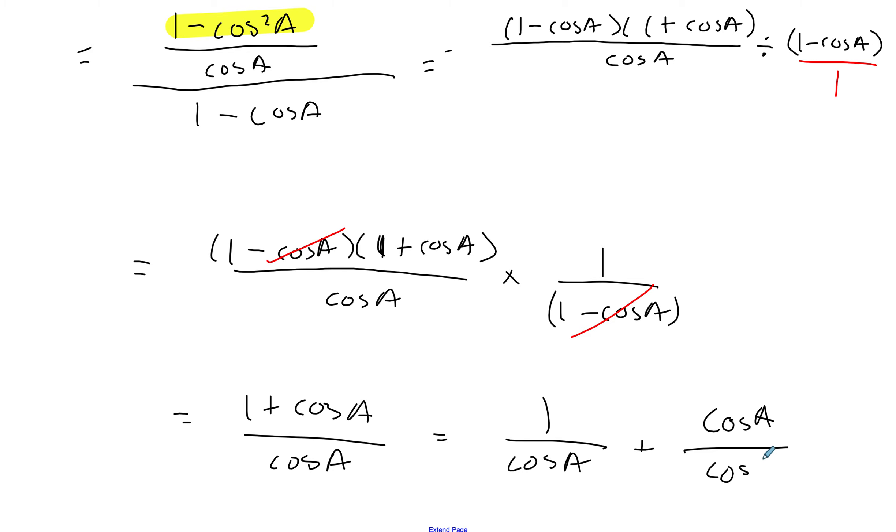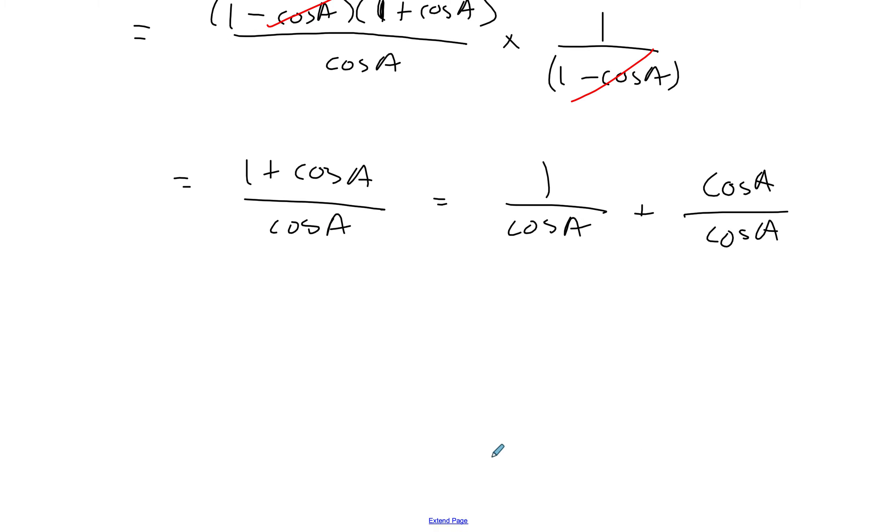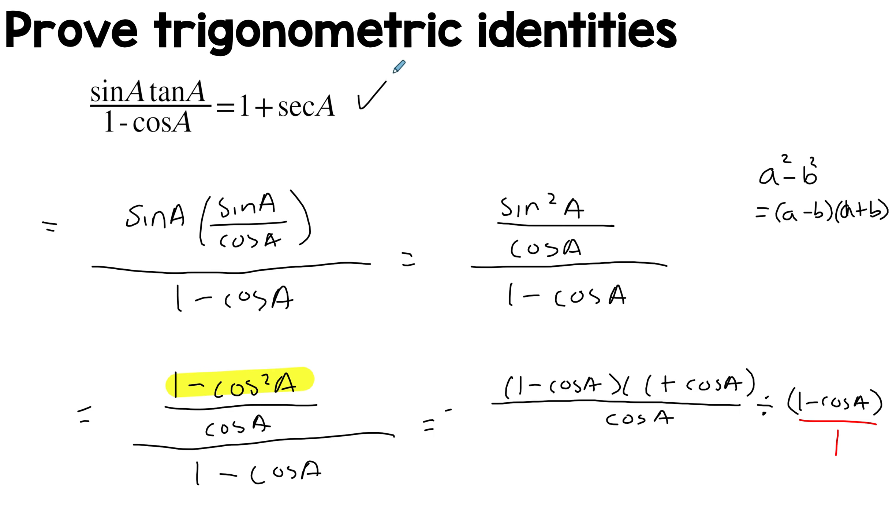And then this fraction which simplifies to 1 over cos A is just secant A and this is 1, which is what we needed here.